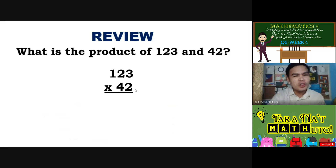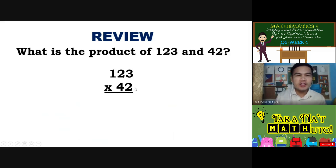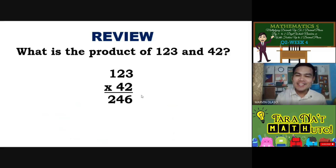123 times 42 is a partial product of 123 times 2 and 123 times 40. Gawin natin yung pinaka-common use na method. Let's start with the 1's place by multiplying by 2. 123 times 2, we have 246. 2 times 3 equals 6, 2 times 2 equals 4, 2 times 1 equals 2 — that's why it becomes 246. Next is multiplying by the 10th digit 4, so 123 times 4 equals 492.